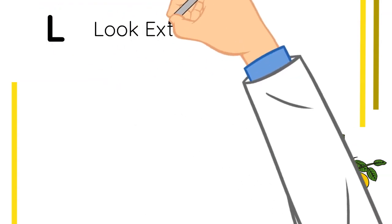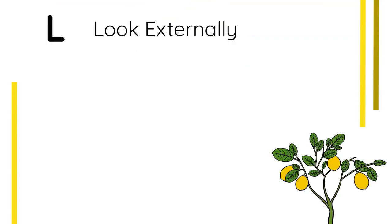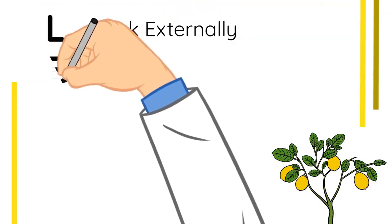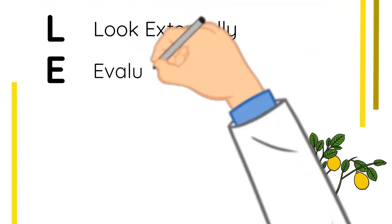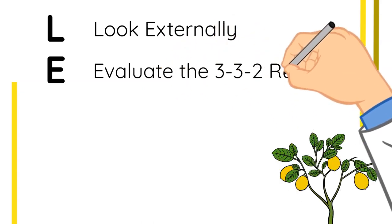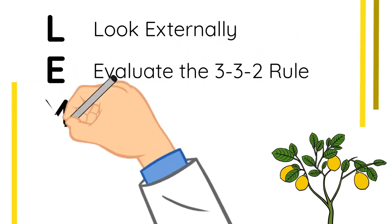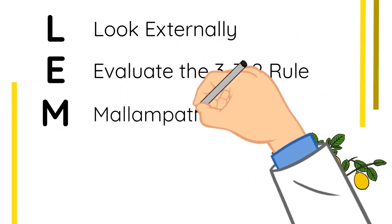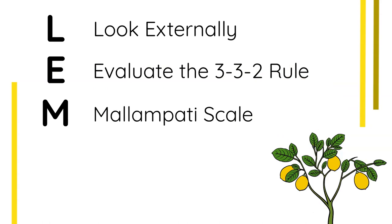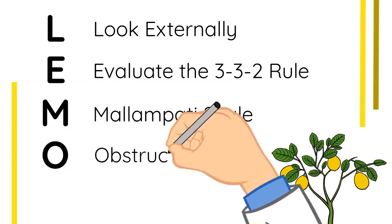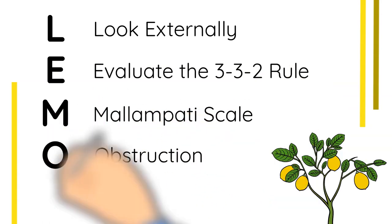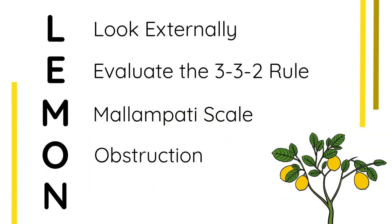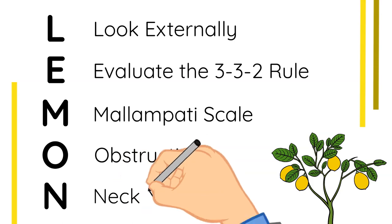The LEMON mnemonic stands for: L — Look externally; E — Evaluate the 3-3-2 rule; M — Mallampati Scale; O — Obstruction; N — Neck Mobility.